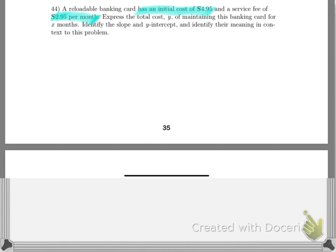Then it gives us that y is the total cost of maintaining the bank card for X months. The first thing I always like to do is write out what are my variables. X is measured in months, but it's really measuring time. So X is the number of months you're using this bank card.